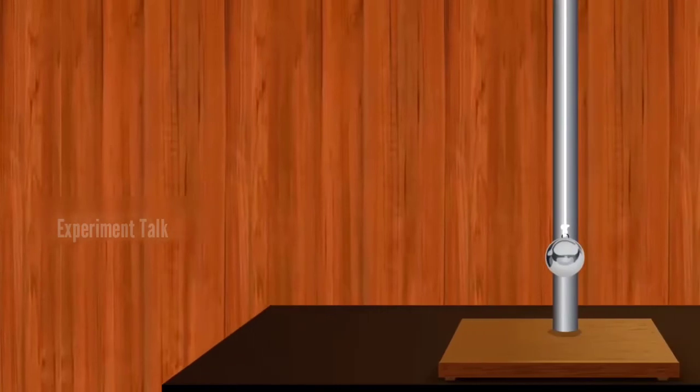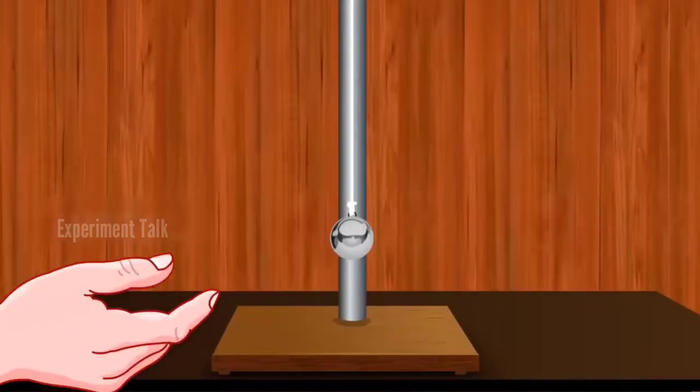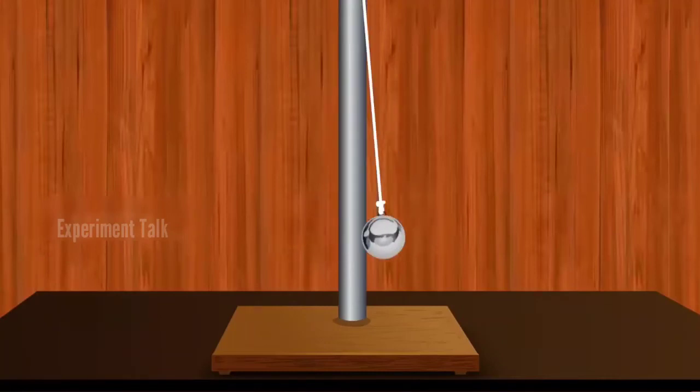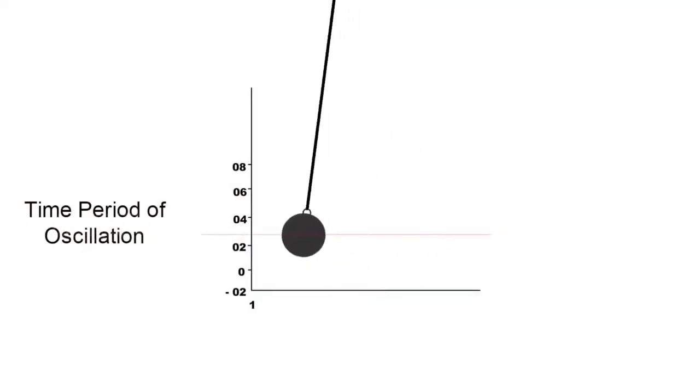Displace the small bob from equilibrium and let it oscillate. It oscillates as a simple pendulum. Let's study the motion of the simple pendulum.